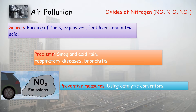Oxides of nitrogen are also responsible for acid rain. When NO2 combines with O2 and water, it forms HNO3 — nitric acid. Nitric acid dissolved in rainwater produces acid rain, and acid rain is very harmful. So how can we prevent this?